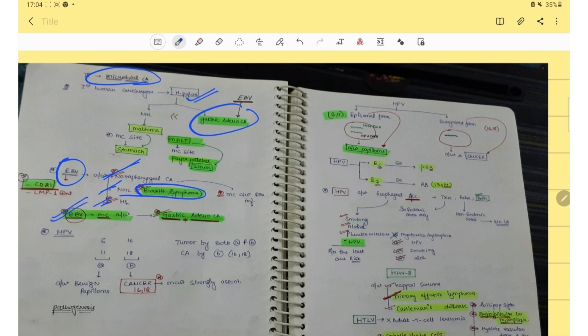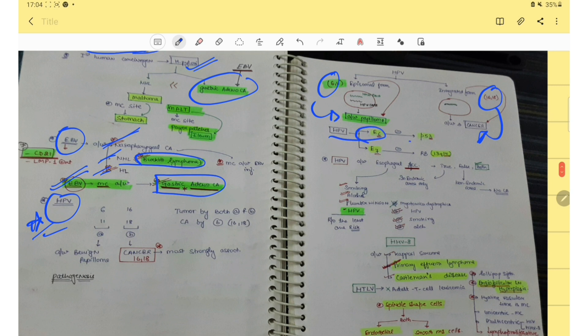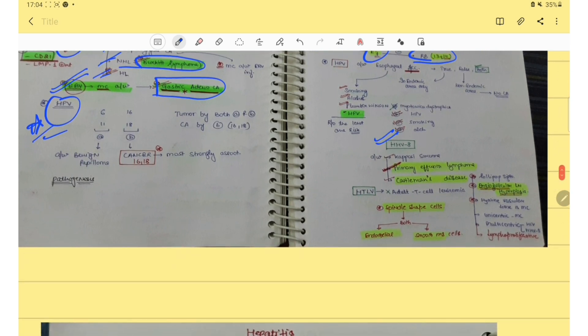Then HPV is the most important. Type 6 and 11 is associated with papilloma and 16 and 18 is associated with cancerous form. HPV E6 will inhibit the P53 and E7 will inhibit the RB gene. Then HHV8, this is also very important. It is associated with Kaposi sarcoma and Castleman disease.